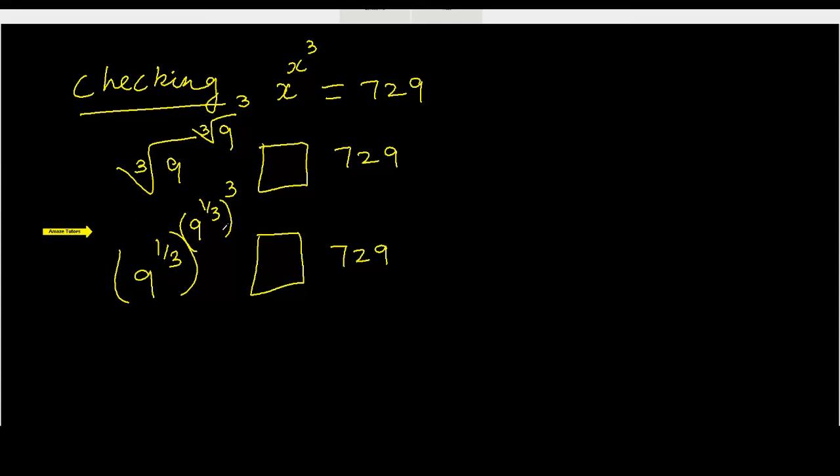Now multiply these two. So using the power of power rule again, I am going to simplify the left side. A raised to the power m to the power n is m times n.